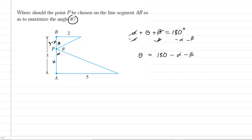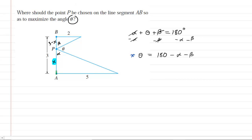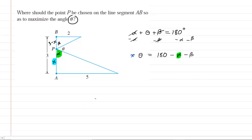The problem with this equation is that it's in terms of alpha and beta; it will be better to express it in terms of x. To do that, we're going to use some trigonometry. Looking at the larger of the two triangles and applying the tangent function to alpha — tangent is opposite over adjacent — the tangent of alpha equals the opposite side of 5 over the adjacent side x.